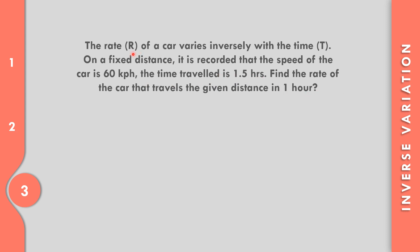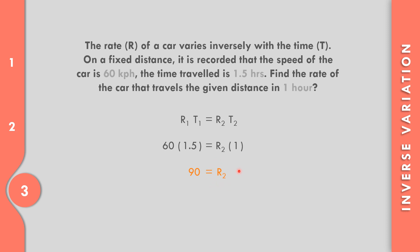Or we may use the proportion formula: R sub 1 times T sub 1 equals R sub 2 times T sub 2. The first value of rate is 60 kilometers per hour, and the time is 1.5. Our second rate is unknown, and the time is 1 hour. Multiplying 60 times 1.5 equals 90, and 1 times R sub 2 equals R sub 2. So R sub 2, or the rate, equals 90 — meaning 90 kilometers per hour.